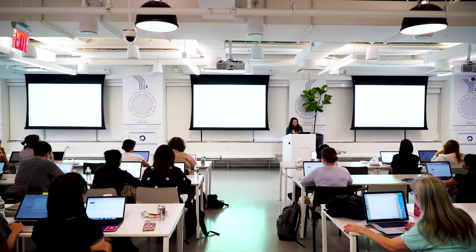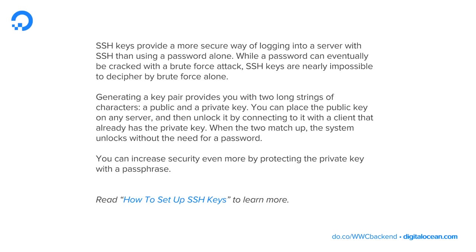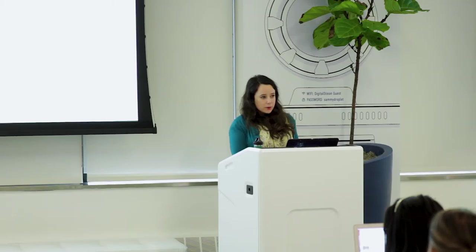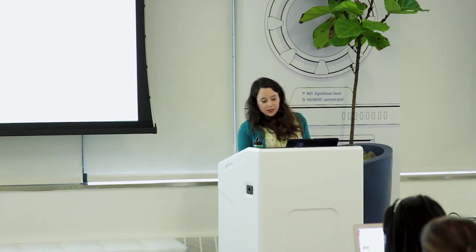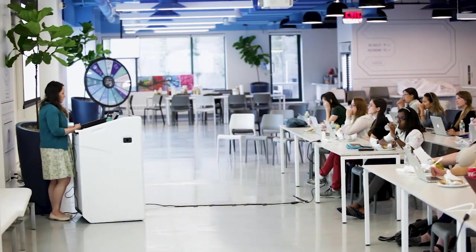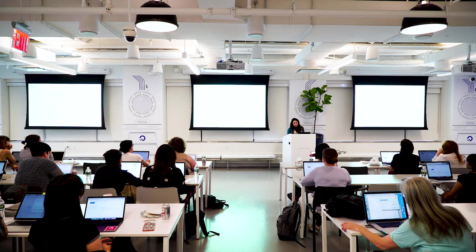SSH keys provide a more secure way of logging into a server instead of just using a password. Passwords can be cracked by brute force attacks, but SSH keys are virtually impossible to crack that way. When you generate an SSH key pair, you get two long strings of characters — one is the public key and the other is the private key. You place the public key on your server, then unlock that server by connecting with the client that has the private key. When these two match up, you're able to log in without needing a password. You can further increase security by including a passphrase when you set up your SSH key pair.